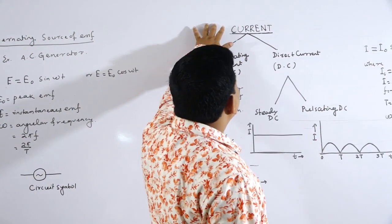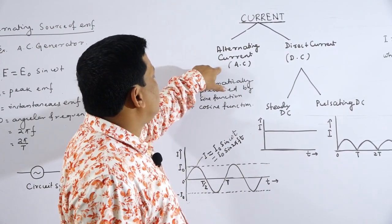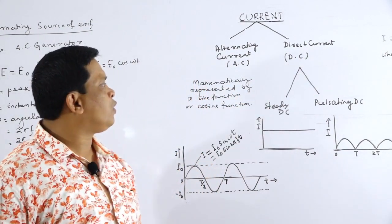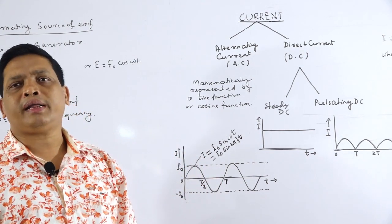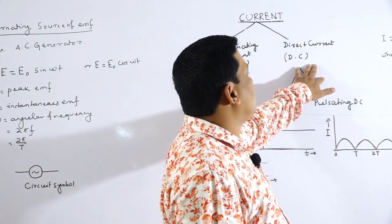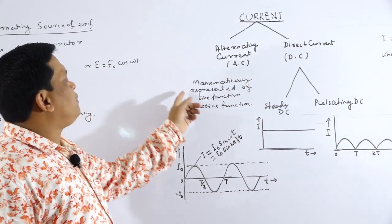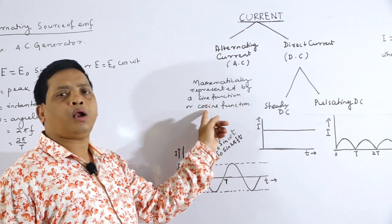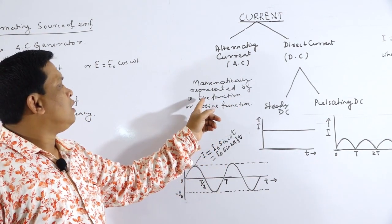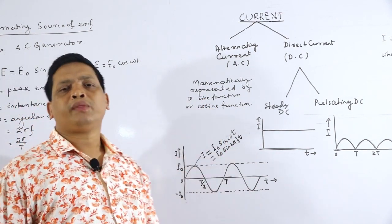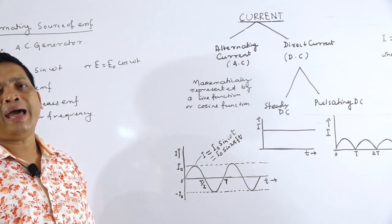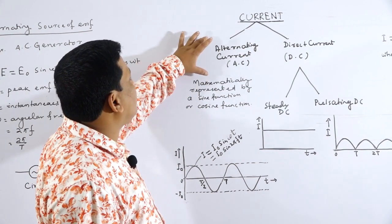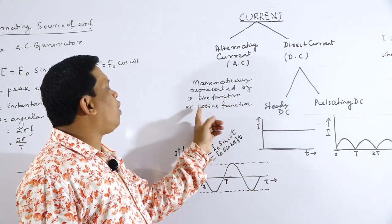This current is of two types. One is alternating current, abbreviation AC, and the other one is direct current, abbreviation DC. Alternating current is mathematically represented by a sine function or a cosine function, because both are periodic functions — meaning values are repeated after regular intervals.